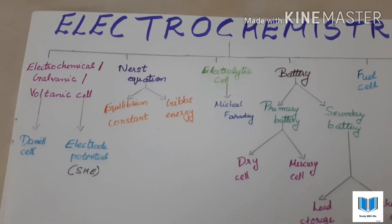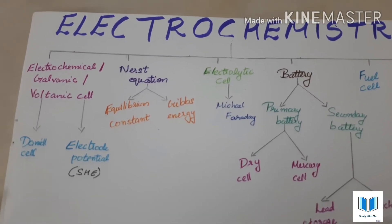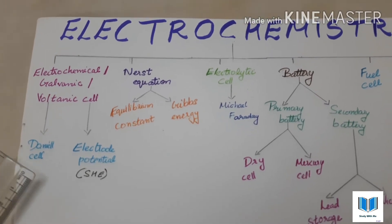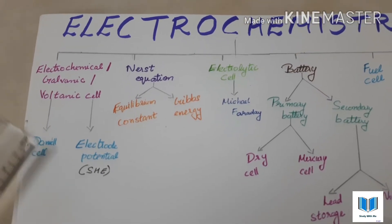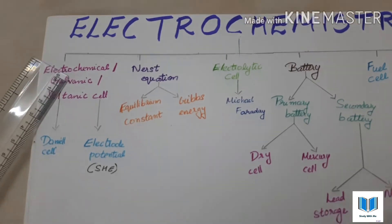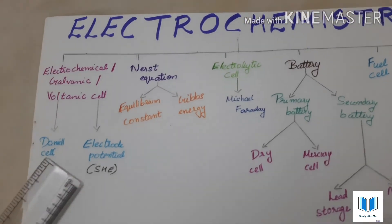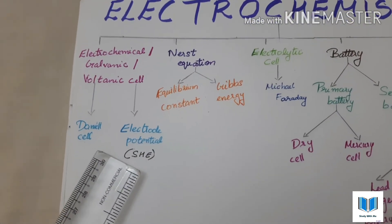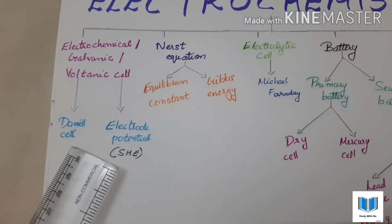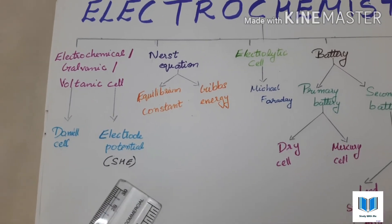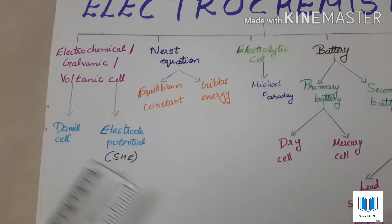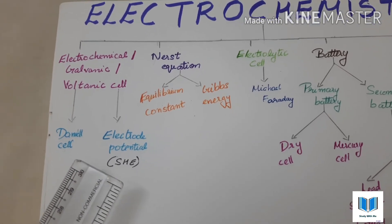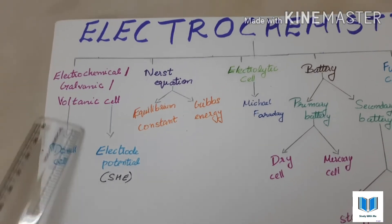There are two main sections. The first one is the Daniel cell, which is an example of an electrochemical cell. Next is electrode potential. In electrode potential, we have the standard hydrogen electrode, which is used to calculate the potential of individual half cells.